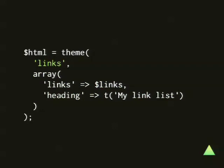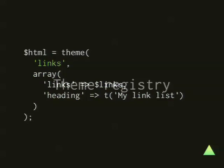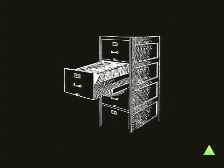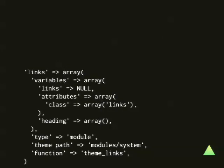Back to the thing called the theme hook. The theme function looks at what is called the theme registry to find out what it should do with the theme hook. The theme registry is a big filing cabinet — it has a drawer for every available theme hook in Drupal. If the theme function doesn't find your theme hook, it returns nothing, because it doesn't know how to do anything with it.